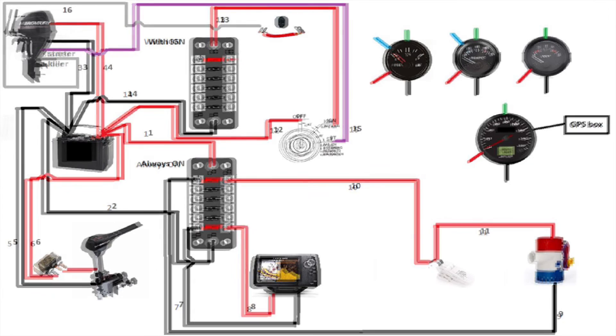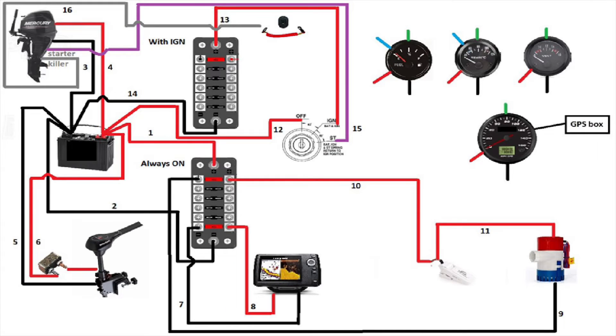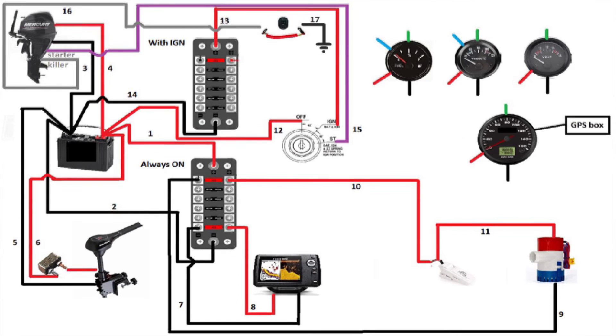We have connected the start engine, we need to connect the kill switch now. It's usually a black wire with a yellow line on it, and of course the kill switch needs to be grounded. So wire 17 on the drawing will go to the negative of the battery.